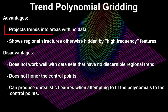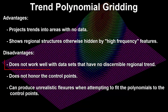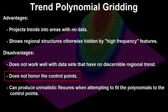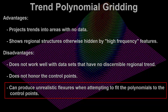Advantages: trend polynomial gridding will project trends into areas with no data, and it shows regional structures otherwise hidden by high-frequency features. Disadvantages: it does not work well with data sets that have no discernible regional trend, it does not honor the control points, and it can produce unrealistic flexures when attempting to fit the polynomials to the control points.